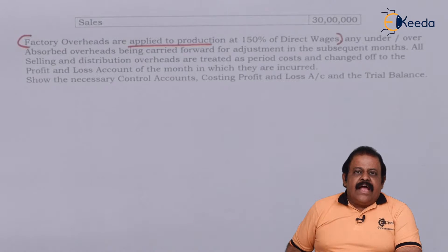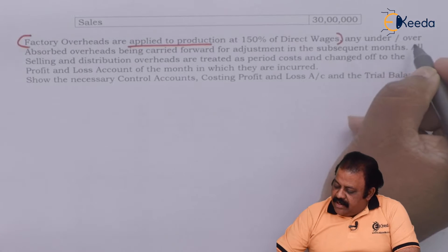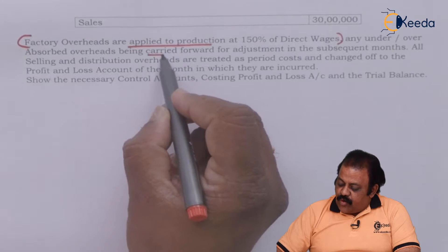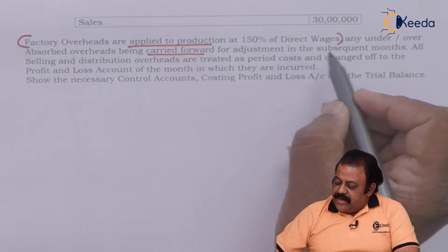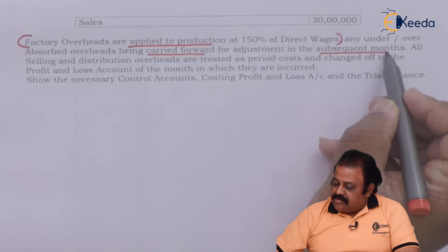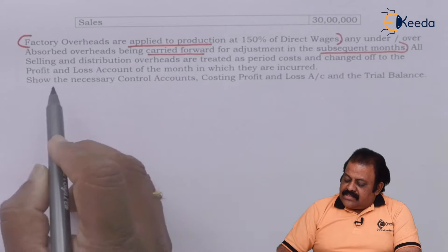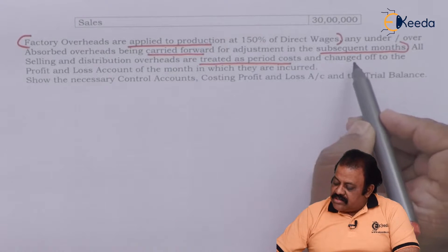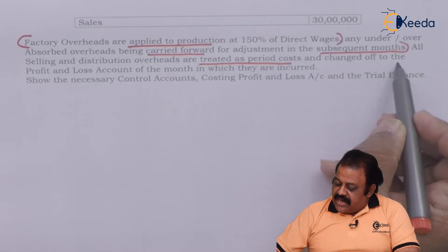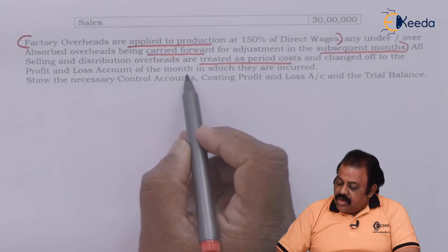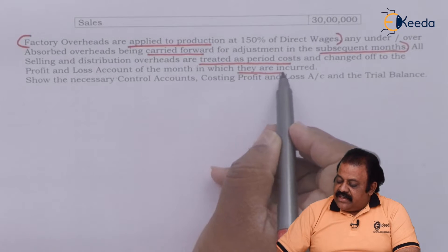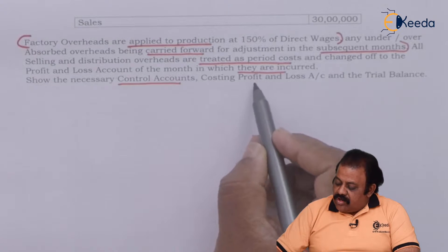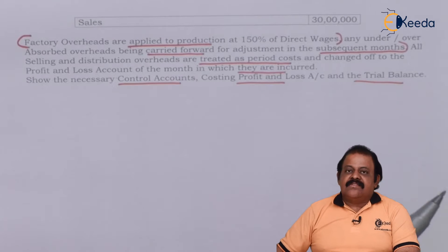This 150% rate is for the purpose of absorption. Any under or over absorbed overheads are carried forward for adjustment in the subsequent month. All selling and distribution overheads are treated as period cost, that is fixed cost, and charged off to the profit and loss account of the month in which they are incurred. Show the necessary control accounts, costing profit and loss account, and trial balance.